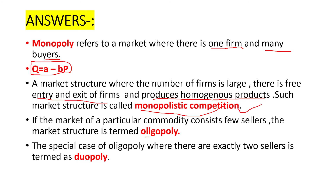What is oligopoly? If a particular market consists of few sellers — more than one seller but few in number — the market structure is called oligopoly. What is duopoly? Duopoly is a special case of oligopoly where there are exactly two sellers.